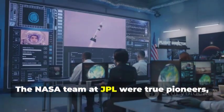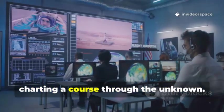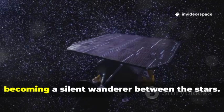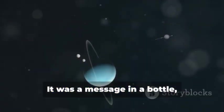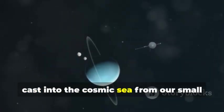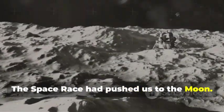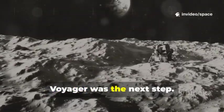The NASA team at JPL were true pioneers, charting a course through the unknown. They knew Voyager would eventually leave the solar system becoming a silent wanderer between the stars. It was a message in a bottle, cast into the cosmic sea from our small blue world.